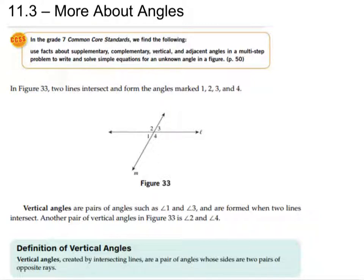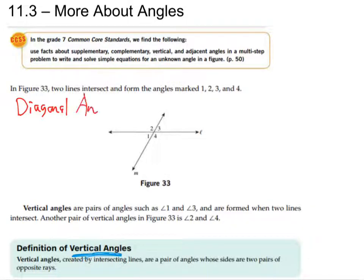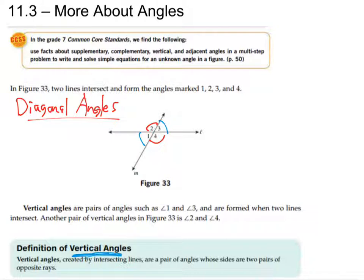We're going to start with the intersection of two lines and something called vertical angles. I think they should have come up with a different word — I would have called them diagonal angles, because that's really what we're talking about. Vertical angles are diagonal. So it would be like angle 2 and angle 4 there. Those are what they mean by vertical angles. So angles 2 and 4 are vertical angles, and also 1 and 3 are vertical angles.